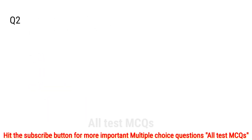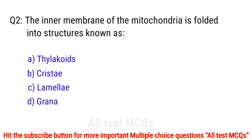Question number 2. The inner membrane of the mitochondria is folded into structures known as? The right answer is option B: cristae.